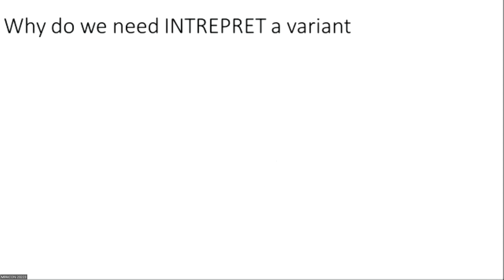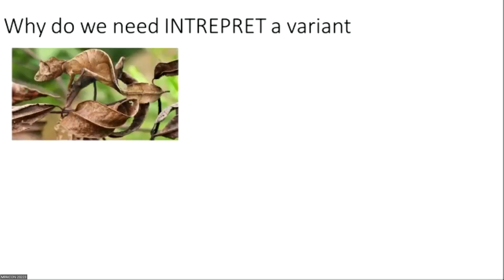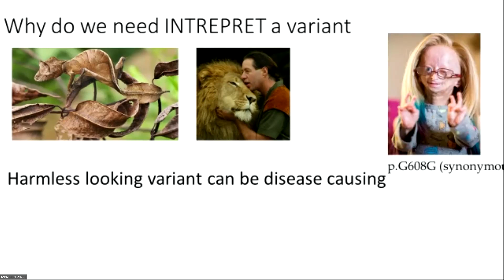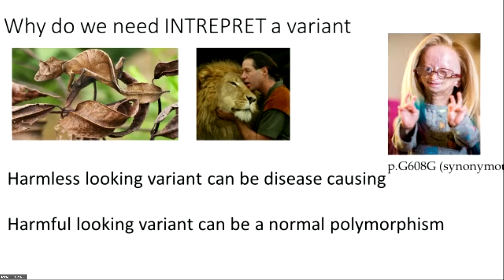We are doing a lot of next generation sequencing and a lot of variants are being identified. Why do we really need to interpret a variant? If you see this picture, it almost looks like some dry leaves, but actually it's a camouflaged lizard, which is very harmful to some insect. So what looks may not really be true. A harmless-looking variant like a synonymous variant can cause the severe disease of progeria, while various harmful-looking variants like stop codon mutations can be present as normal polymorphisms in the population.